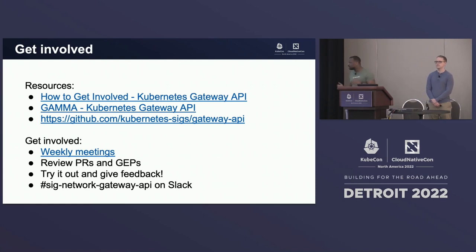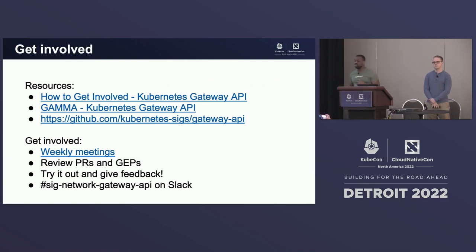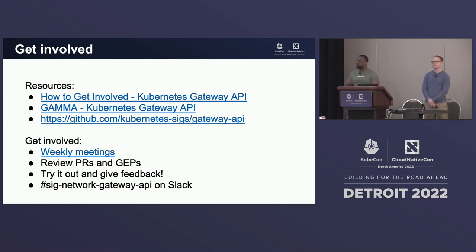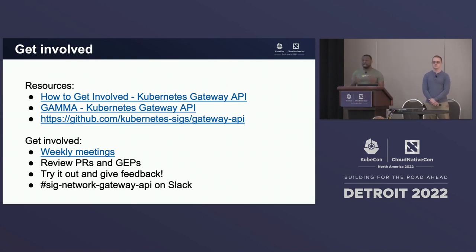We have weekly meetings, and we alternate time slots — alternating between 8 AM Pacific and 3 PM Pacific — to be as inclusive of different time zones as possible. There are PRs on GitHub and we're on the network-gateway-api channel in Slack. It's the same community between ingress and mesh, and we're trying to make Kubernetes a better place and make it easier for everyone to use. Thank you all.